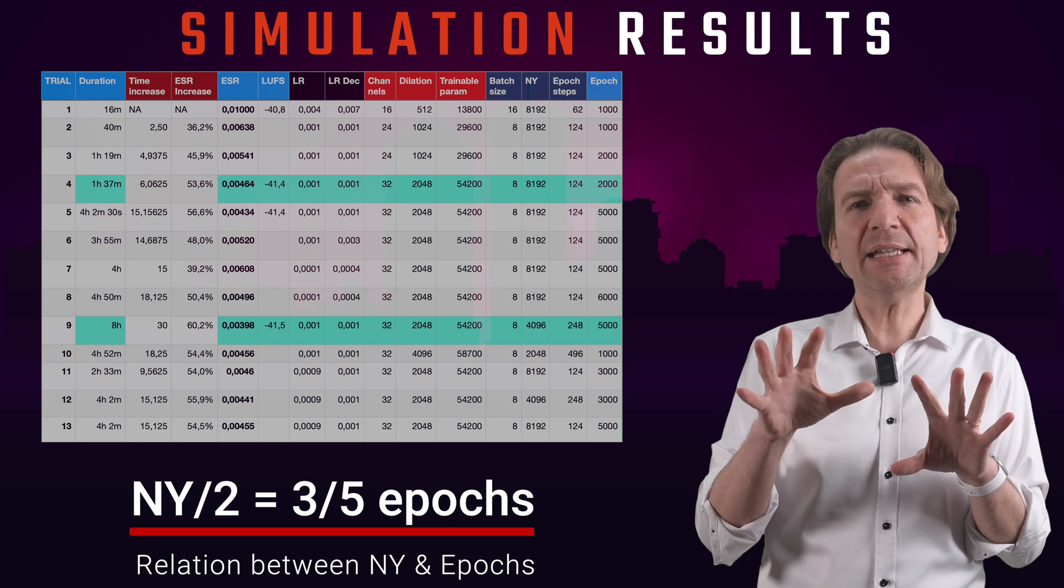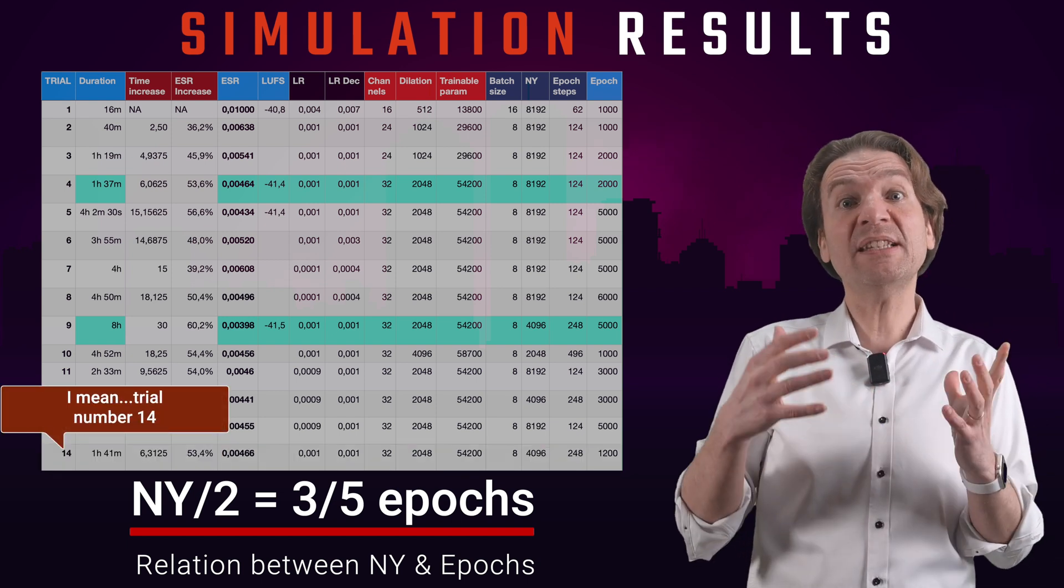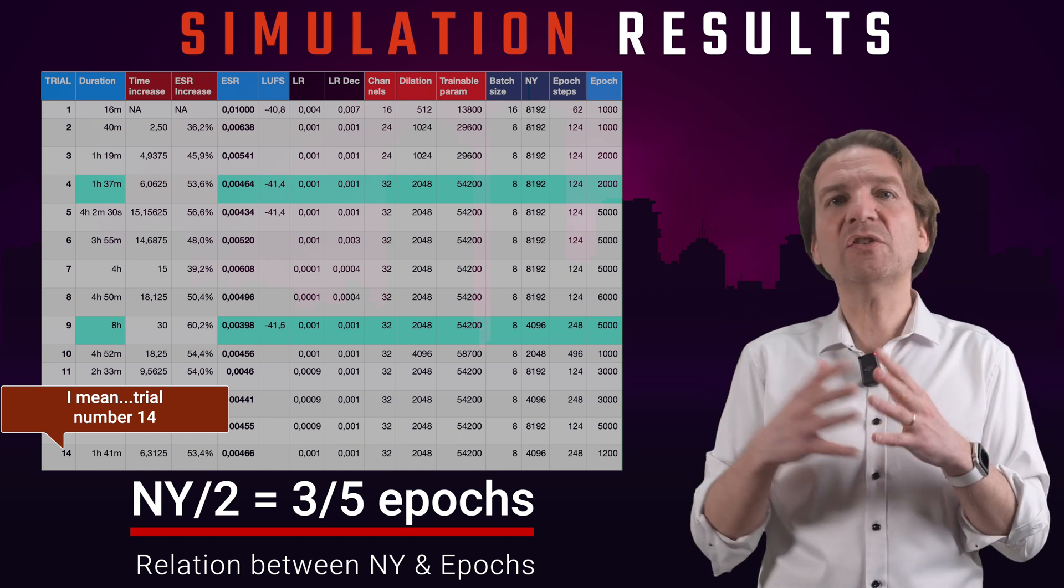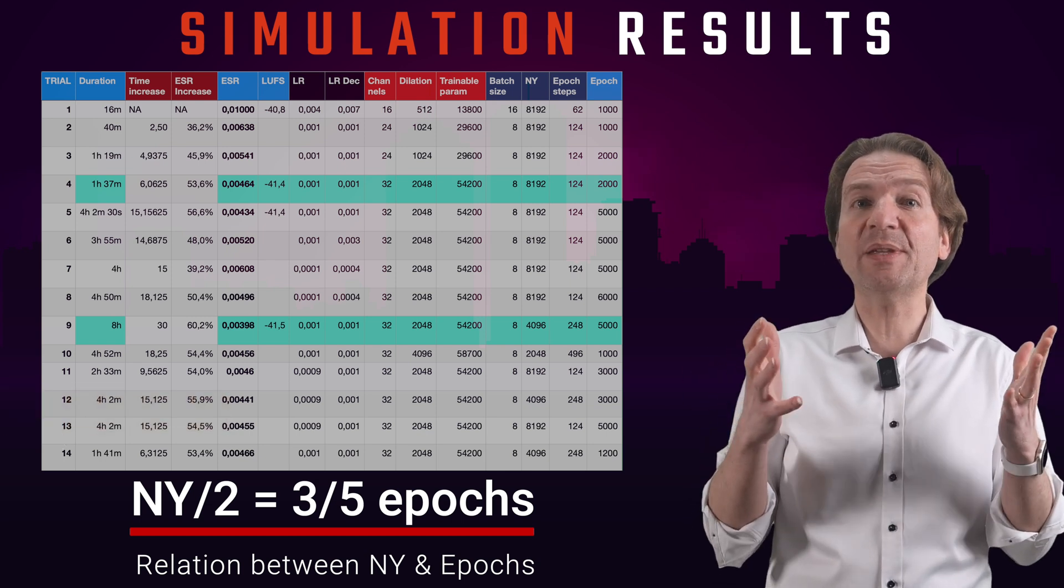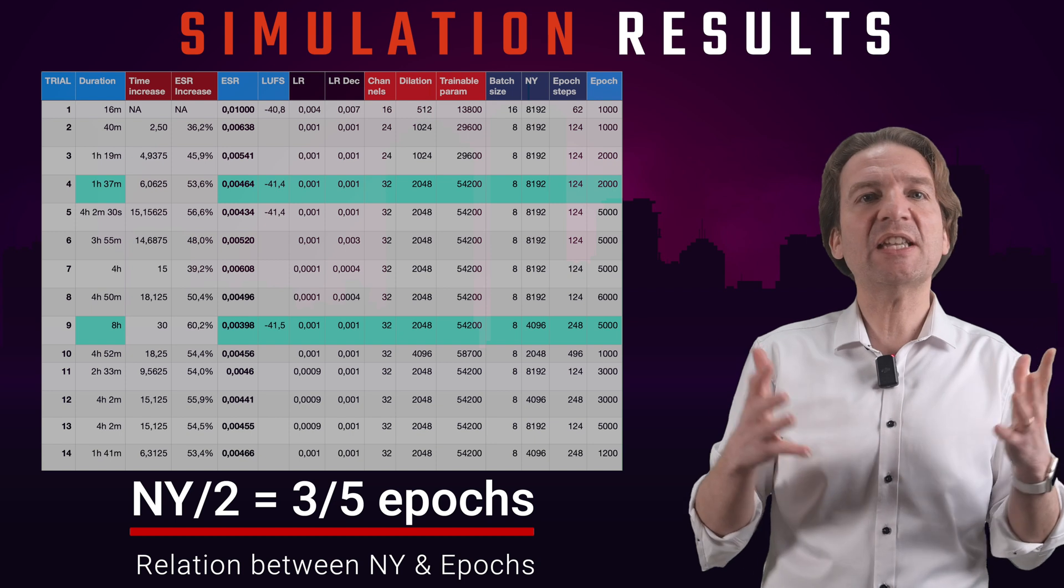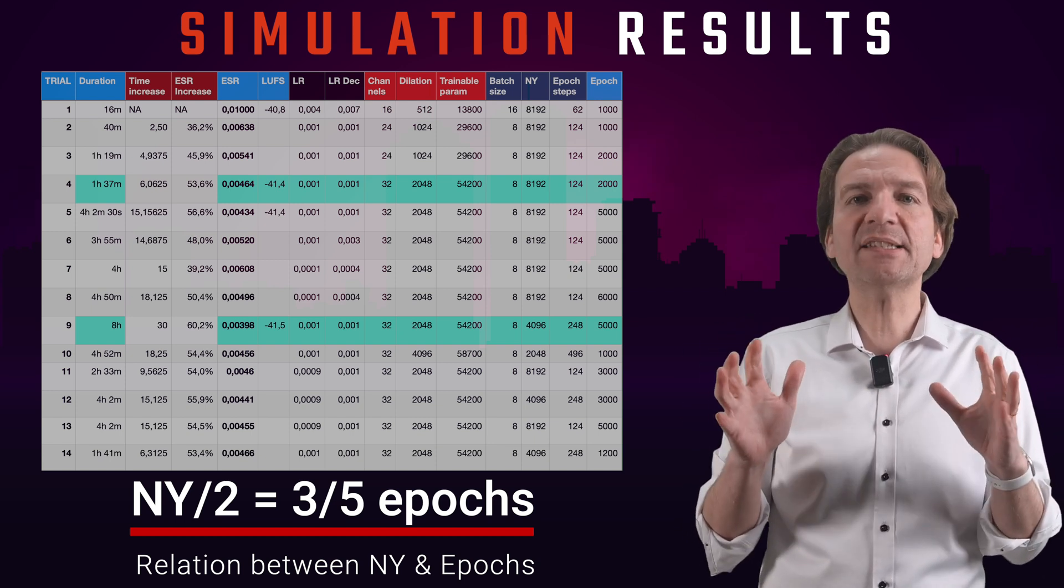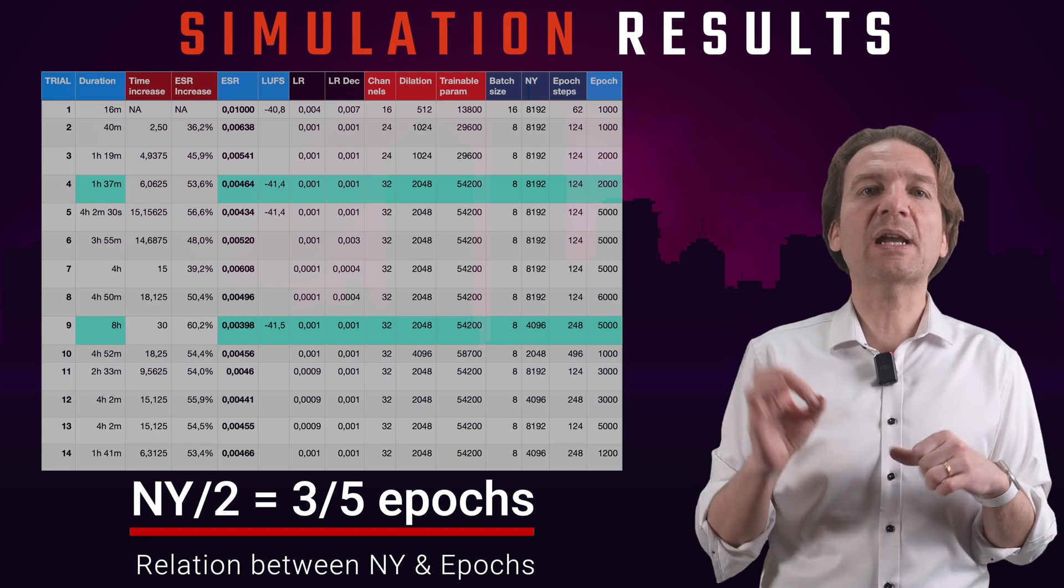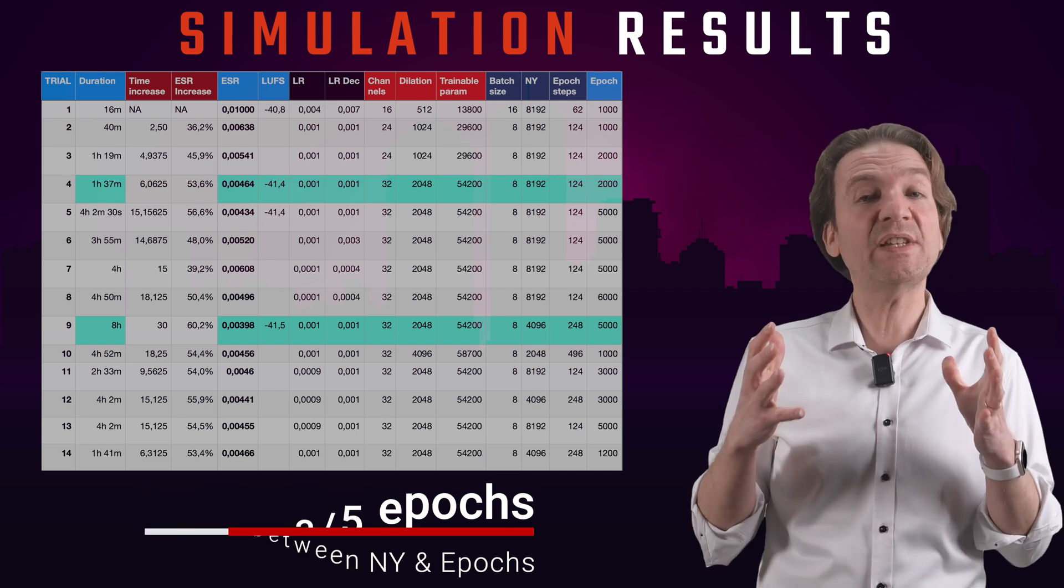Now, let's apply this principle to our trial number 13, where I'm using the same parameters of my trial number 4, but with 3 fifths of the epochs. Well, we are getting almost the same ESR in almost the same time. So I would basically leave the NY fixed to its original value of 8192, just changing epochs if I want to improve the ESR.